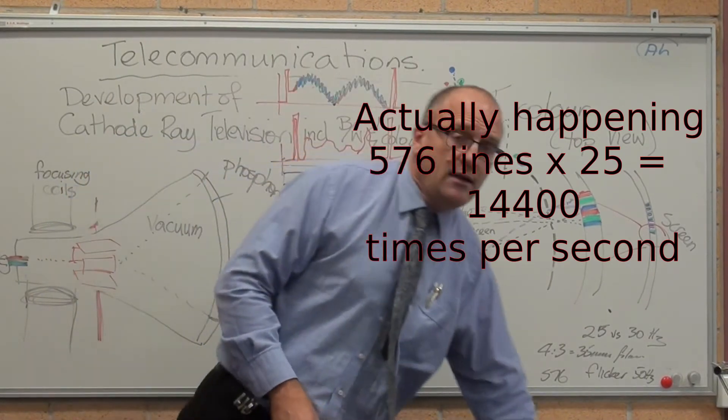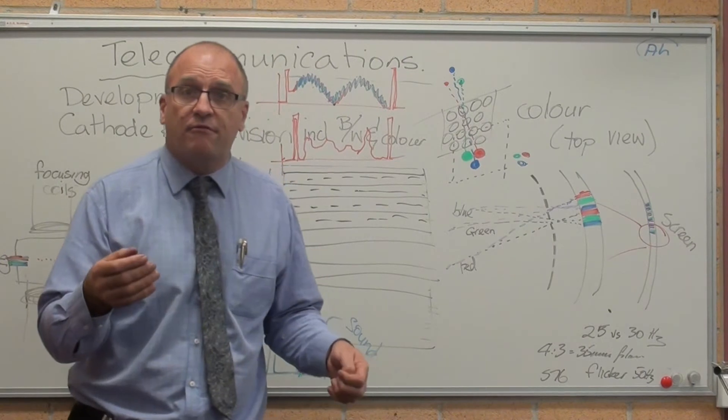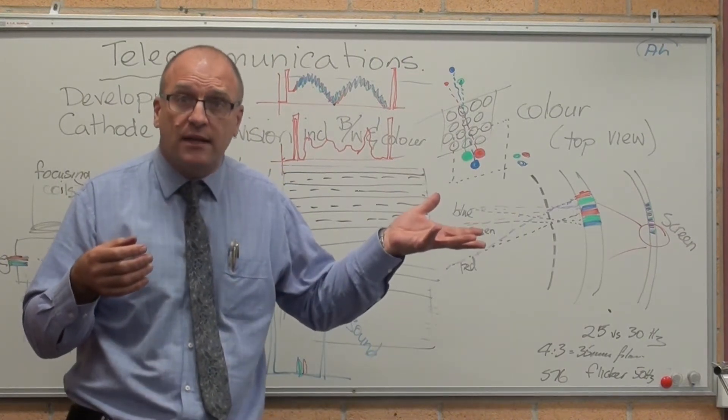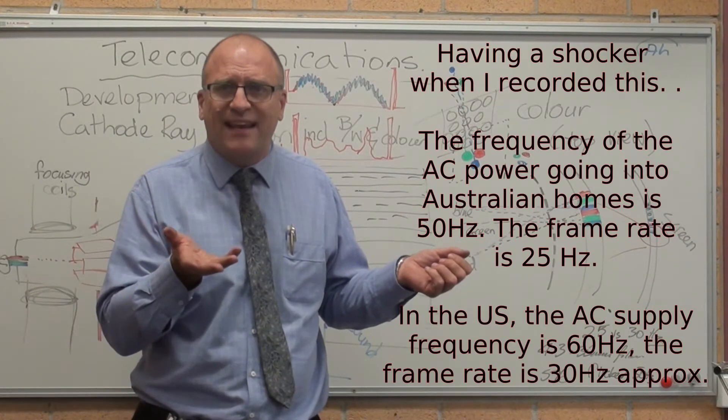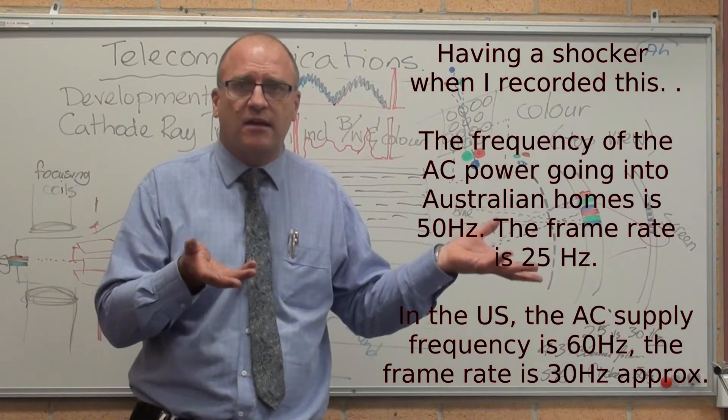In Australia, we work at 25 frames a second. In America, they work at 30, because Australian electricity is 50 hertz. In America, it's 60 hertz.